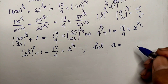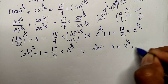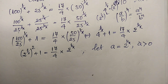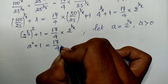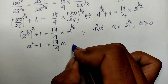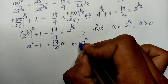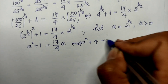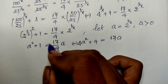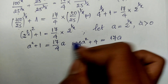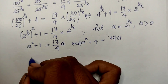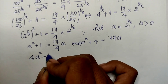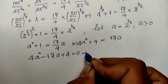Let a equal 2 power 1 over h, where a is positive. So we get: a squared plus 1 equals 17 over 4 times a. Multiplying both sides by 4 gives: 4a squared plus 4 equals 17a. Moving everything to the left-hand side: 4a squared minus 17a plus 4 equals 0.